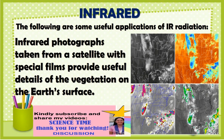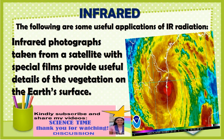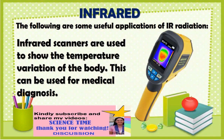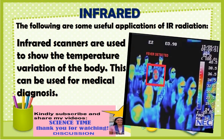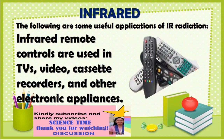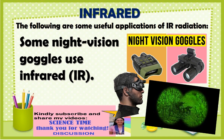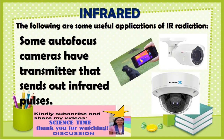Infrared photographs taken from a satellite with special films provide useful details of the vegetation on the Earth's surface. Infrared scanners are used to show the temperature variation of the body and can be used for medical diagnosis. Infrared remote controls are used in TVs, video cassette recorders, and other electronic appliances. Some night vision goggles use infrared, and some autofocus cameras have transmitters that send out infrared pulses.